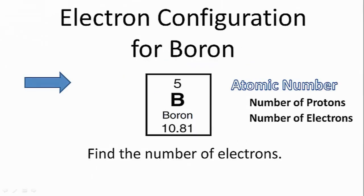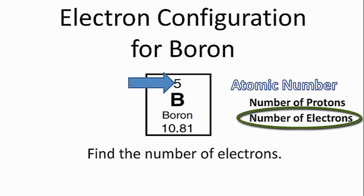The first thing we need to do to find electron configurations is to find the number of electrons for the element. We can find this on the periodic table by looking at the number above the element symbol, which is called the atomic number. That tells us the number of protons, but it also tells us the number of electrons.